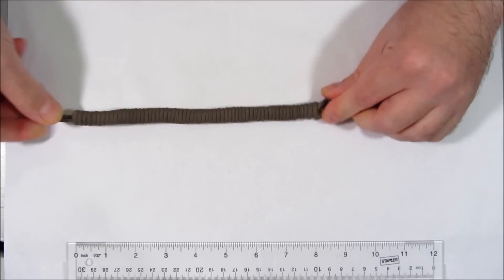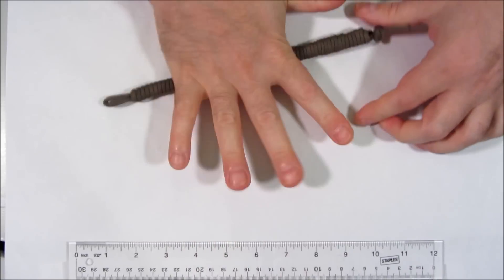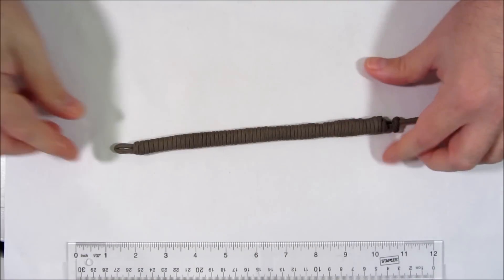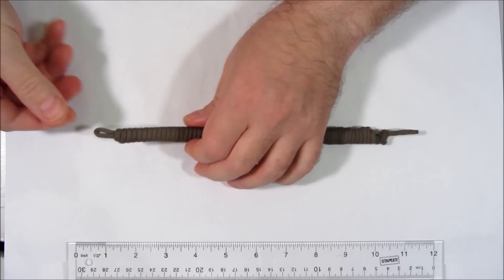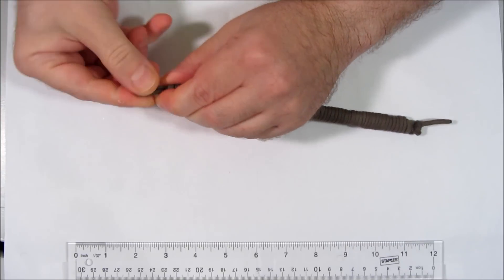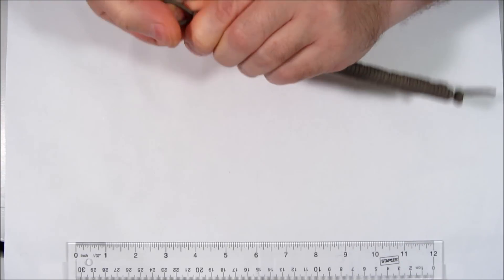You can now neaten it by rolling. There we have a completed bracelet. Let's try it on. I'm going to make the hole a little bit bigger.